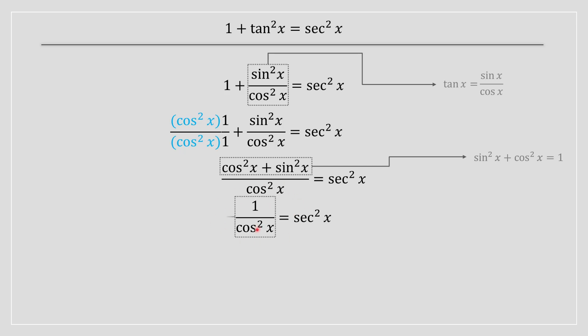There's also a very important trig identity which states that secant of x is equal to one divided by cos of x. Since we've got a squared over here, we're going to have an answer of secant squared of x. And obviously, the left-hand side matches the right-hand side. Therefore, that implies that one plus tan squared of x is equal to secant squared of x.